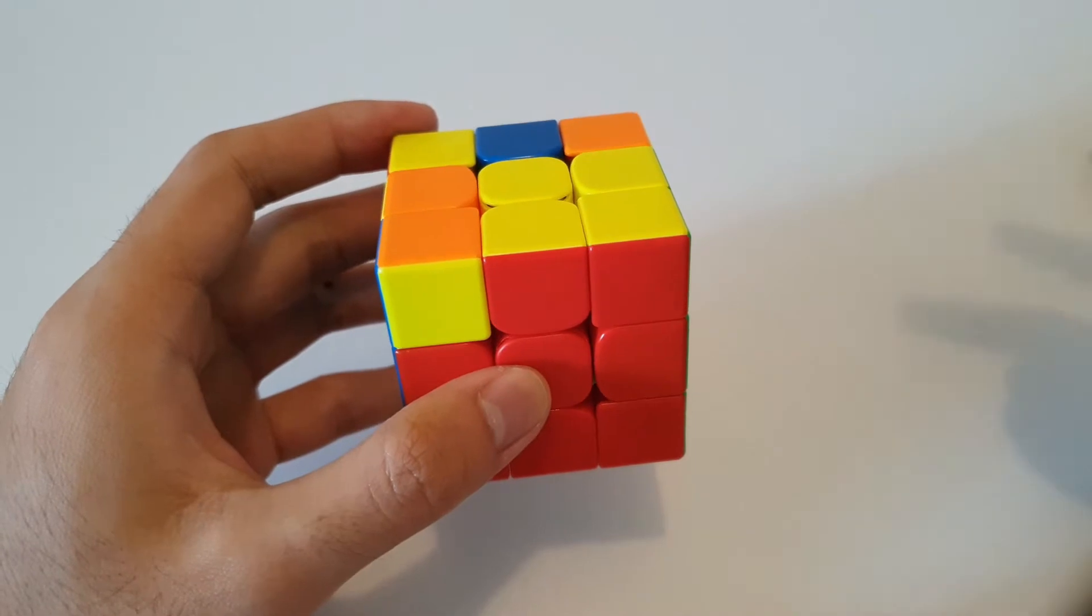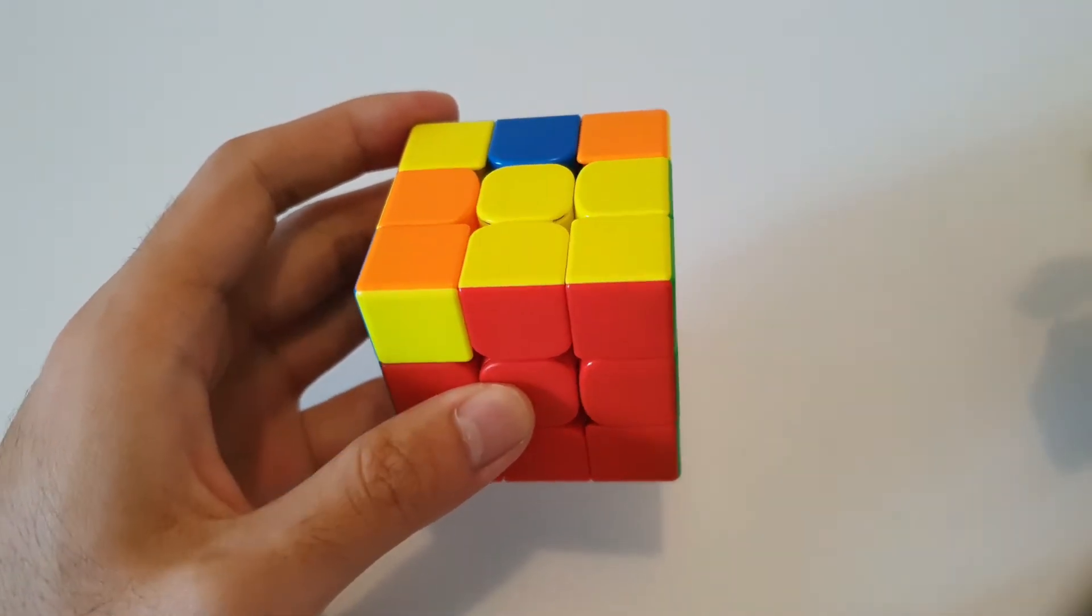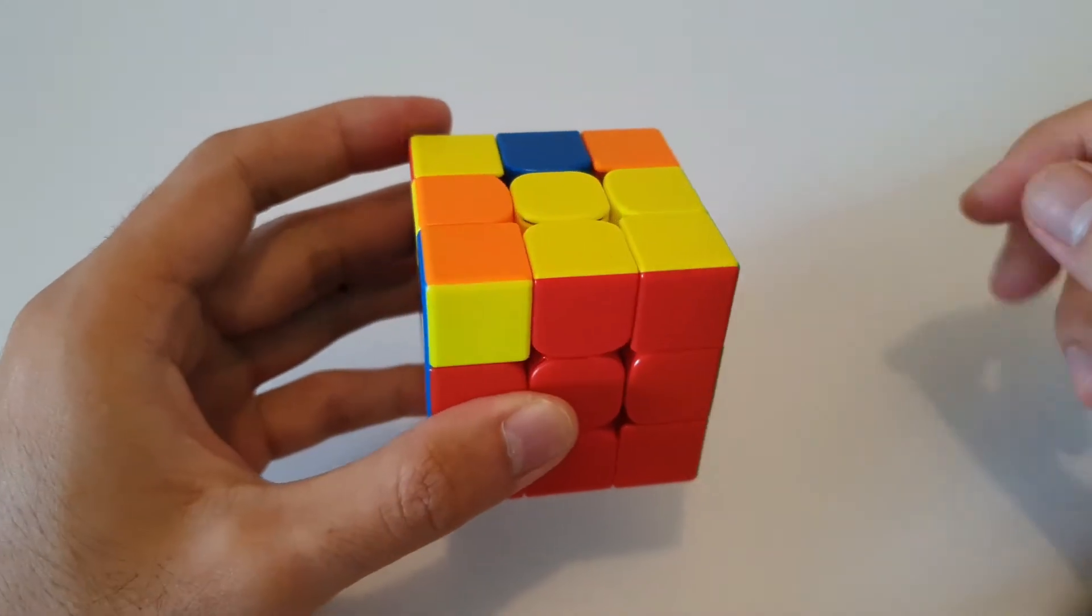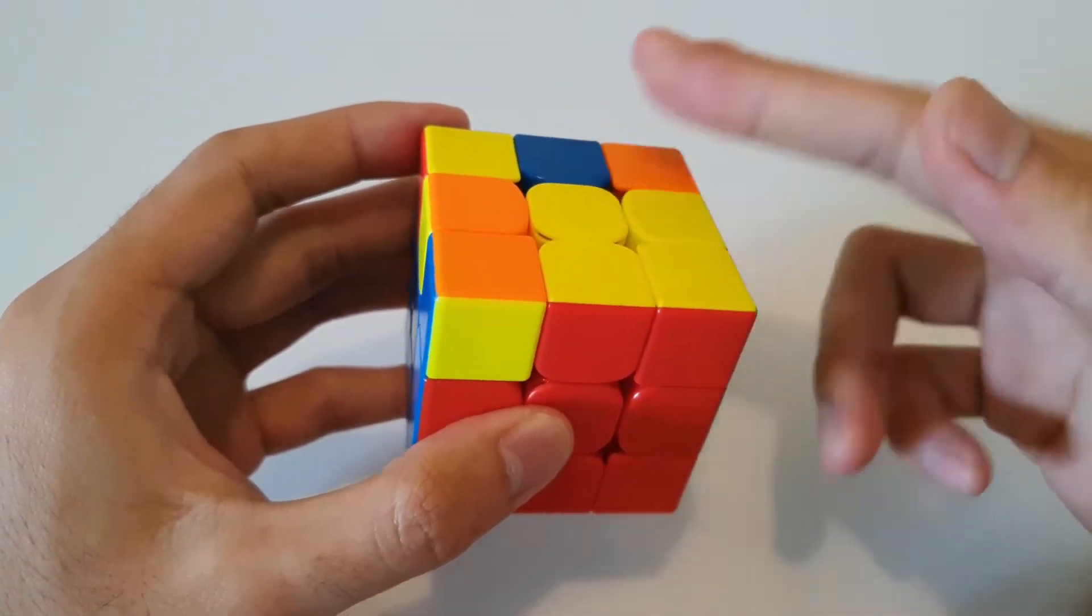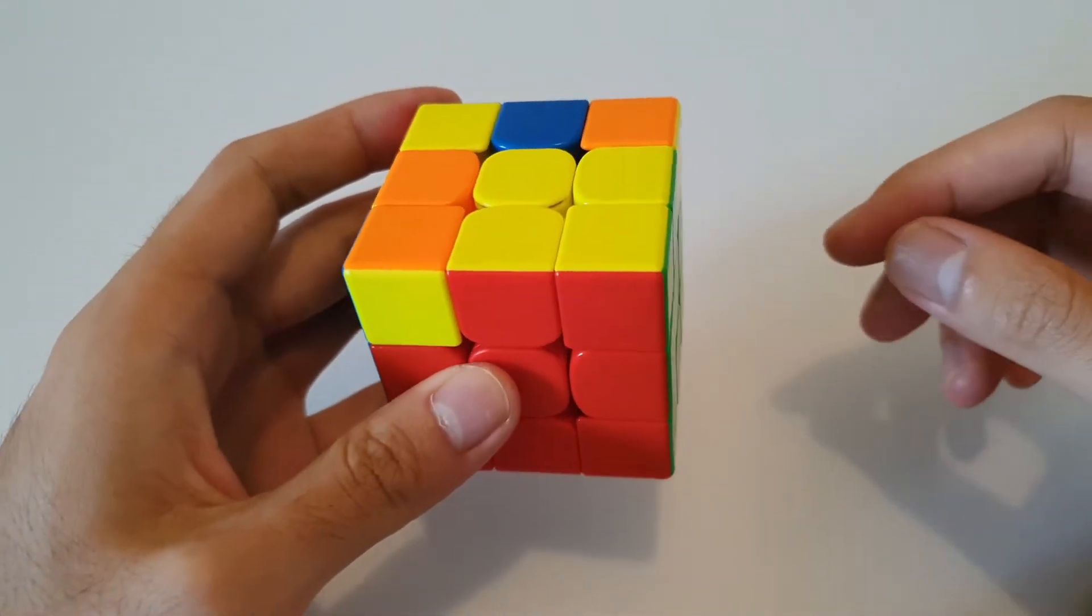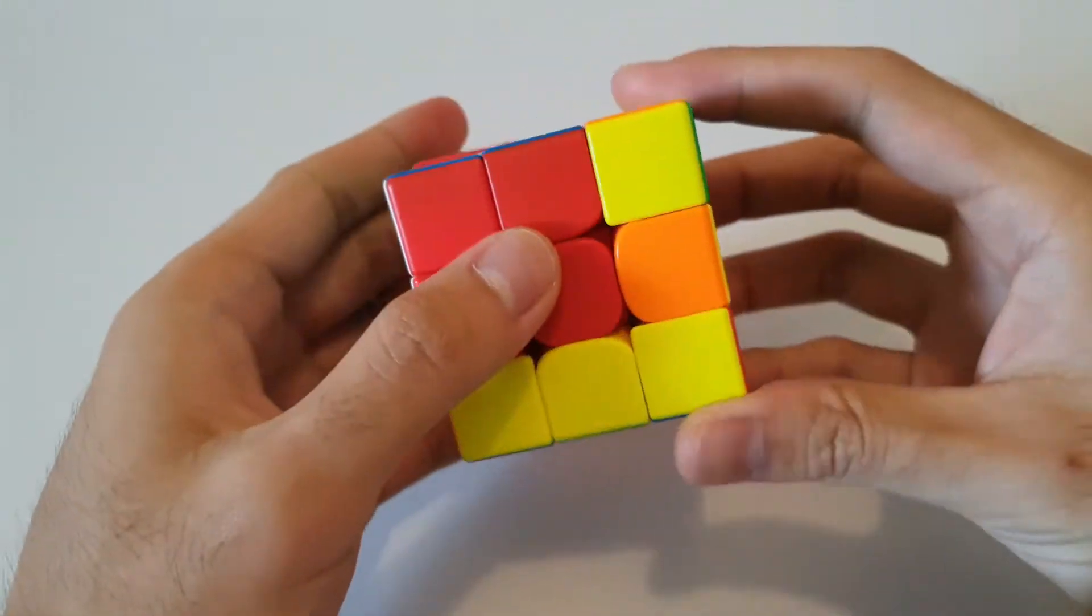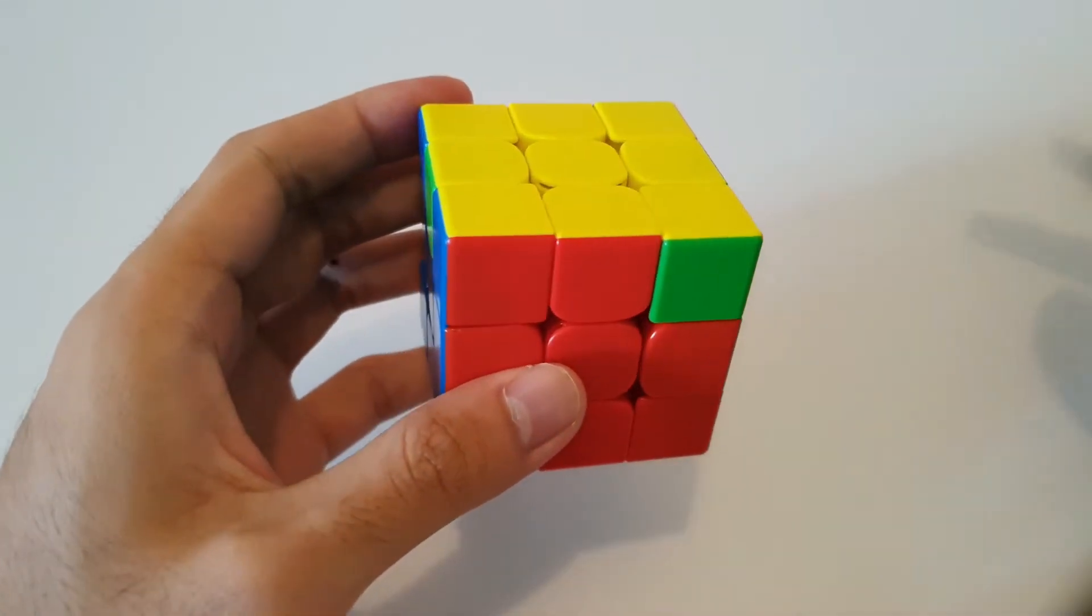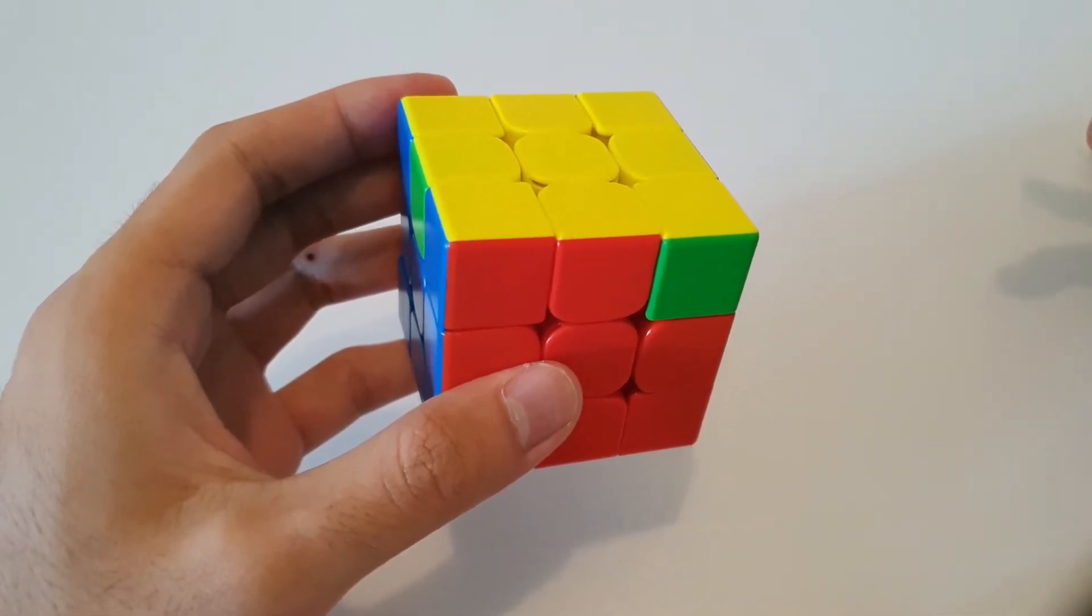So if you didn't already know, OLL is the third step of solving the Rubik's Cube in the CFOP method, and it involves orienting the last layer, or you could think of it as getting the color on the top. For advanced solvers OLL is a single step and can usually be done in one algorithm. However, for beginner and intermediate solvers, OLL can be broken down into two steps, known as 2 Look OLL.